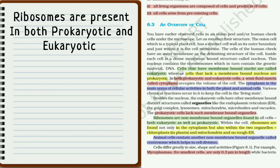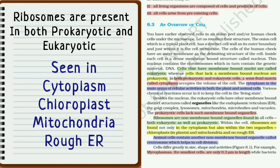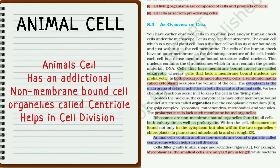Ribosomes are present in both prokaryotes and eukaryotes. Let's see where all ribosomes are present — they are found in mitochondria, cytoplasm, chloroplast, and rough endoplasmic reticulum. In animal cells, there is a non-membrane-bound cell organelle other than the ribosome, called the centriole, which helps in cell division.